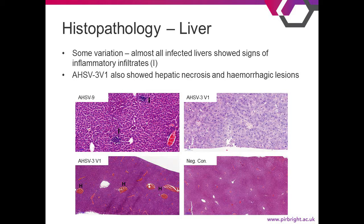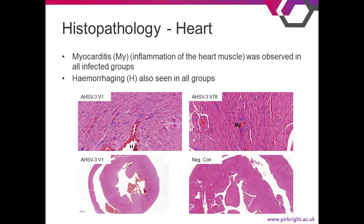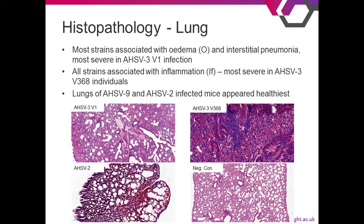The liver was more consistent — all strains showed some form of inflammation and inflammatory infiltrates, but AHSV-3 v1 also showed hepatic necrosis and large hemorrhages within the tissue. The heart was also pretty consistent between groups — they all showed myocarditis, which is inflammation of the heart muscle, to a significant extent, and also showed hemorrhaging. The lung was particularly interesting: most strains showed oedema — fluid within the lungs — which was most severe in AHSV-3 v1 infection. All strains were also associated with inflammation to some extent. The lungs of AHSV-9 and the AHSV-2 strains appeared the healthiest.